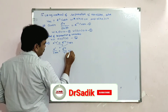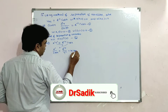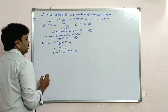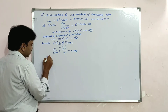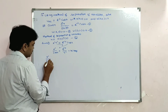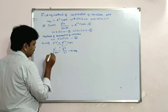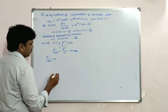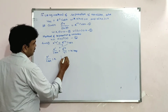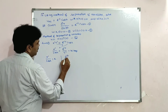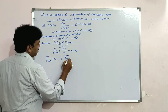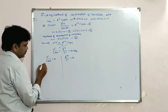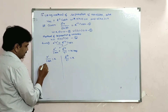Since these two expressions are equal, they must equal some constant k. Taking the first one: X'/cos(x) = k. And the second one: e^(-t)/T' = k.